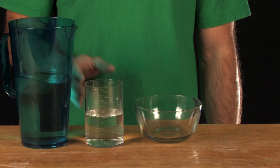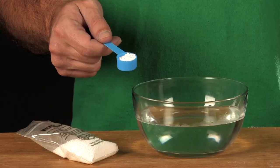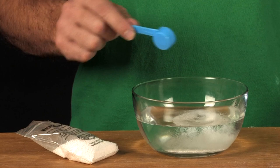First, take your container and measure out one cup of warm water. Next, add one teaspoon of worm activator, making sure all the worm activator is dissolved before moving on.